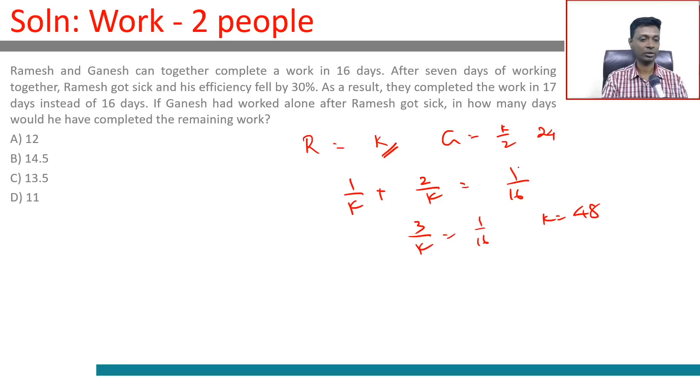If Ganesh had worked alone after Ramesh got sick, in the 7 days Ramesh would have completed 7 by 48 of the task. Ganesh can on each day do 1 by 24 of the task. The task to be completed is 41 by 48.